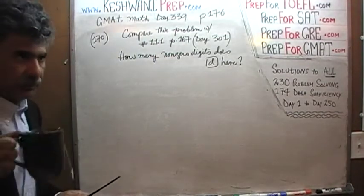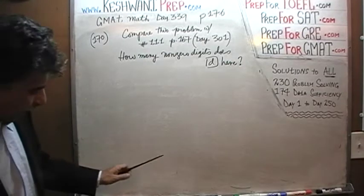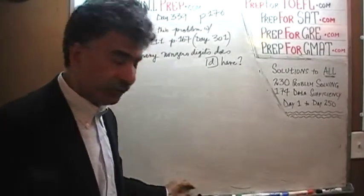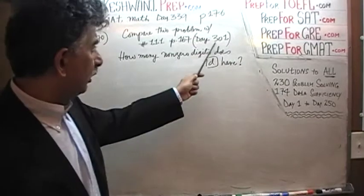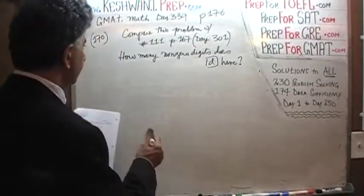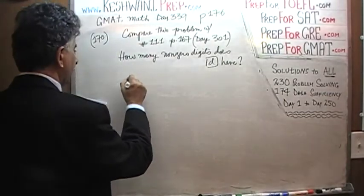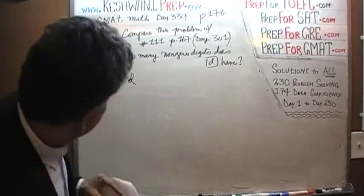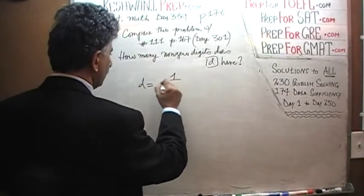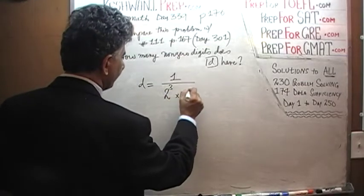Anyway, let's get going. I am taking it for granted that by this time you have already watched day number 301, because these are very similar questions. Here is what we are told: the question is how many non-zero digits does D have? And D equals 1 over 2 raised to 3, times 5 raised to 7.